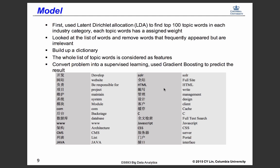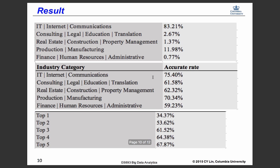The first model I used was LDA. I found the top 100 topic words in each industry category, built a dictionary, and removed stop words and punctuation. Here's an example for the IT major category — you can see the top 30 topic words for the IT field. After collecting all the words together and treating them as features, I converted the problem into a supervised learning task using gradient boosting to predict the result.